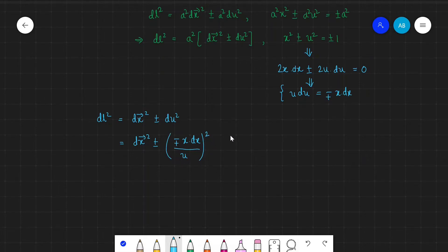So we can write minus-plus x dx divided by u, whole squared. For this u we use the constraint, and we get our final result as dx² plus-minus x² dx² divided by 1 minus-plus x². Now we can get rid of these plus-minus signs by simply putting k in its position.